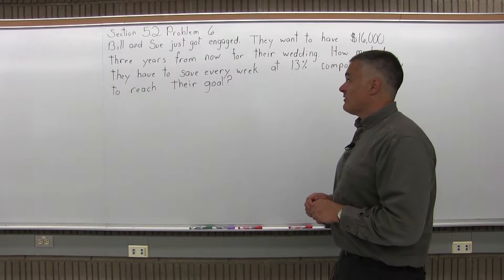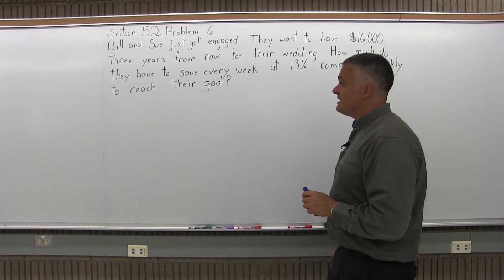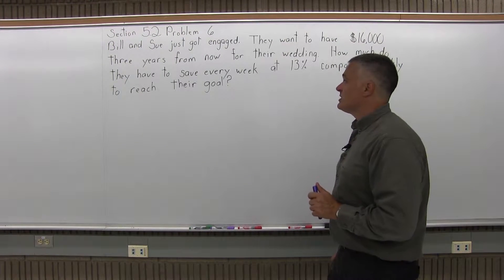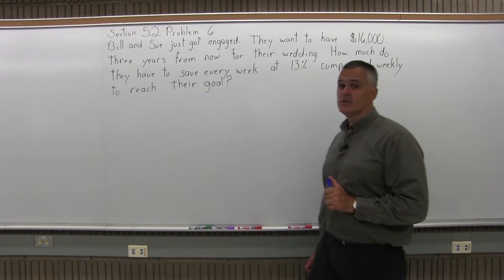This is Section 5.2, Problem 6. It says Bill and Sue just got engaged. They want to have $16,000 three years from now for their wedding. How much do they have to save every week at 13% compounded weekly to reach their goal?